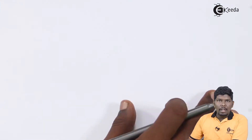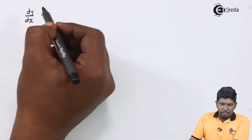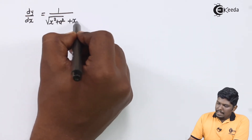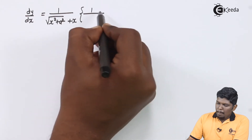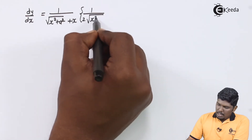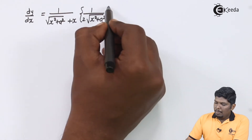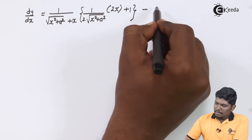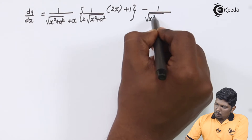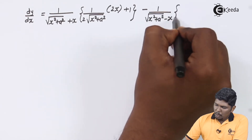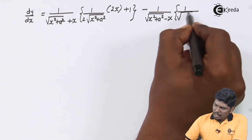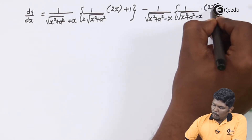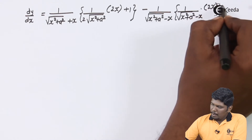Next step: dy by dx equals 1 upon under root x squared plus a squared plus x, in bracket, 1 upon 2 under root x squared plus a squared, into derivative of x squared giving 2x and derivative of a squared giving 0, plus 1. Minus 1 upon under root x squared plus a squared minus x, into 1 upon 2 under root x squared plus a squared, into derivative of x squared giving 2x, derivative of a squared giving 0, minus 1.